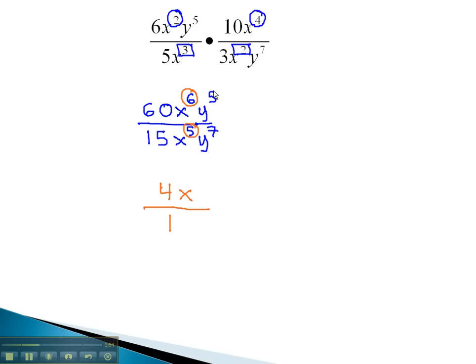On the y's, subtracting 5 minus 7 will give us negative 2. This tells us that the y needs to go in the bottom, or the denominator, as a result of the negative exponent, which will now become positive in the denominator. We also don't need the 1 in front of the y, because the 1 is always implied. This expression is now completely simplified.